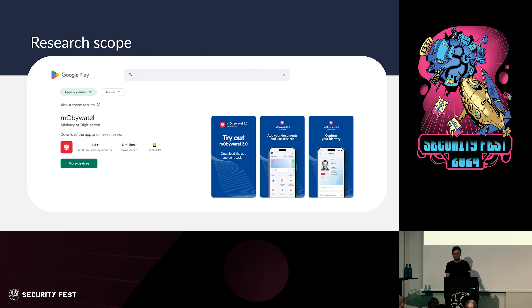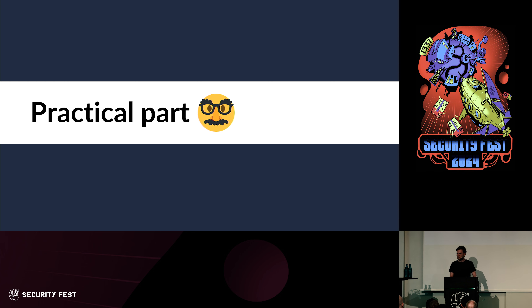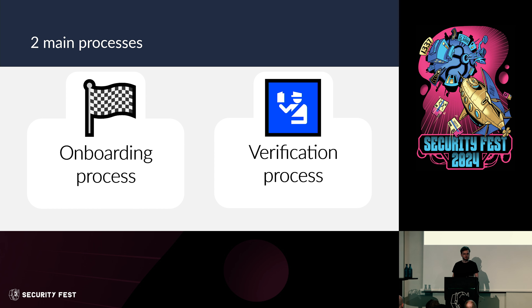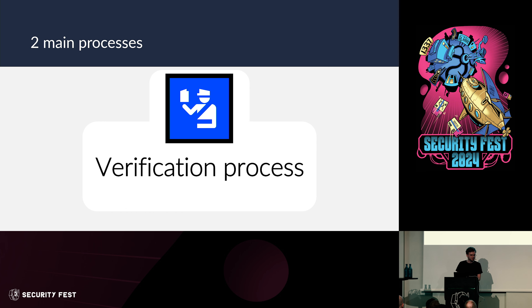The scope of this research is a mobile application called mObywatel, which I'll reference as mCitizen — the English translation. For the practical part, the application usually consists of two main processes: the onboarding stage where you install the app and obtain your ID for the first time, and the verification process which involves data sharing to prove your ID is authentic. We'll focus on the verification process.